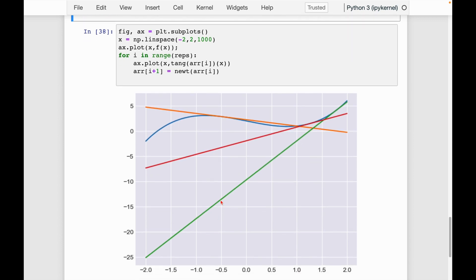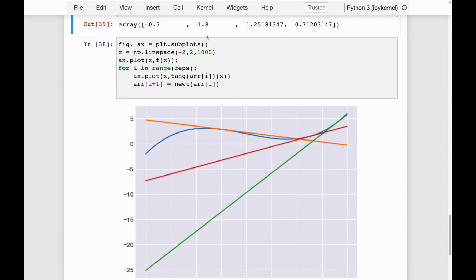So remember, we started x equal to negative 0.5. So this orange line is the line tangent at that point. And we can ask, where does that cross the x-axis? So it's going to be around here. So it's a little smaller than 2 it looks like. So we get 1.8.